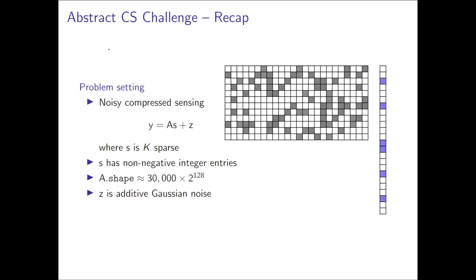The mathematical model is the standard compressed sensing model where observation y equals A times vector s plus some noise. We know that s is sparse with only k non-zero elements and in our case we also know that s is non-negative.